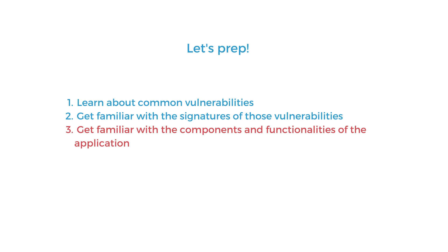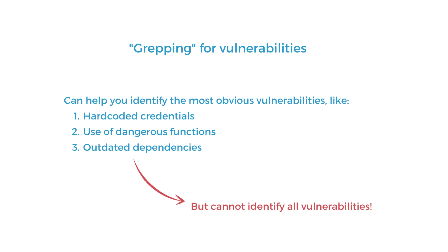If you are short on time, focus on searching for the most common and most severe issues. A quick way to do this is by searching for strings, keywords, or code patterns known to be indicators of vulnerabilities or misconfigurations. For instance, hard-coded credentials like API keys, encryption keys, and database passwords can be discovered by searching for keywords like key, secret, password, or using a regex search for hex strings or base64 strings.